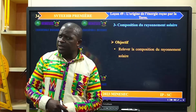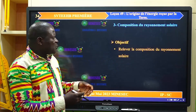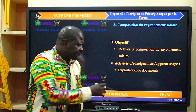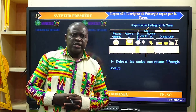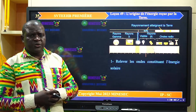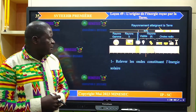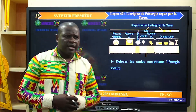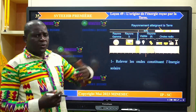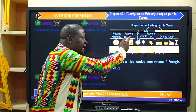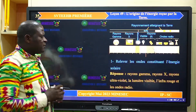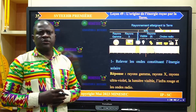Parlons de la composition du rayonnement solaire. Il faudra qu'à la fin nous puissions relever la composition du rayonnement solaire en exploitant le document. Le document présenté nous montre les différents rayonnements qui partent du soleil en direction de la Terre. On nous demande de relever les ondes constituant l'énergie solaire. Nous pouvons voir que nous avons six types d'ondes, des plus faibles aux plus grandes longueurs : les rayons gamma, les rayons X, l'ultraviolet, la lumière visible, l'infrarouge et les ondes radio.